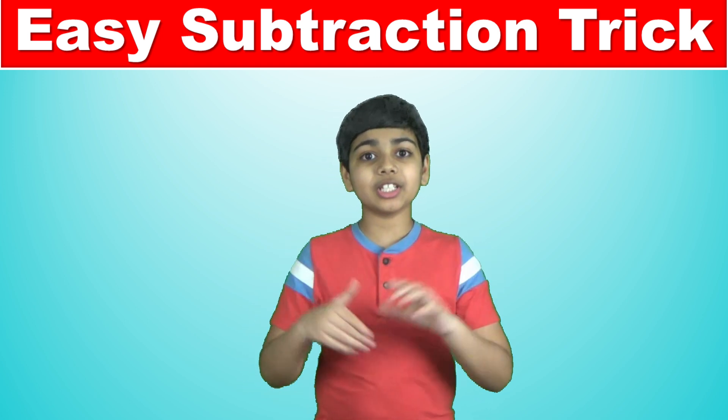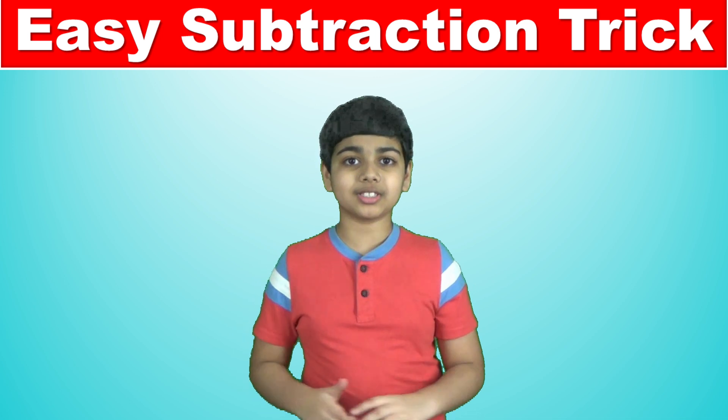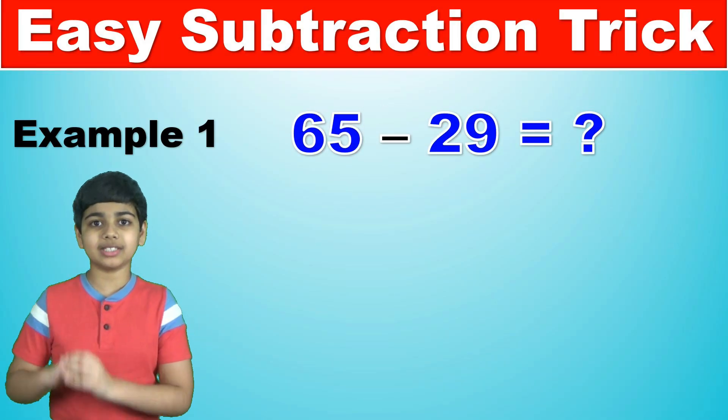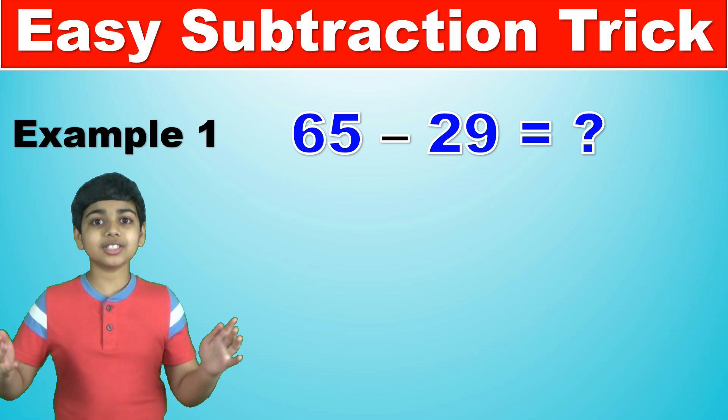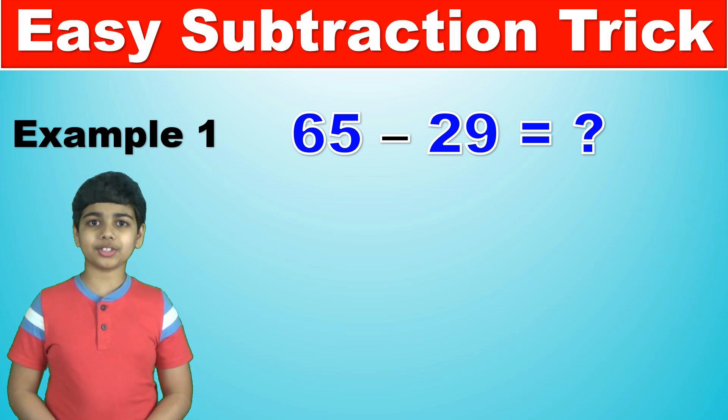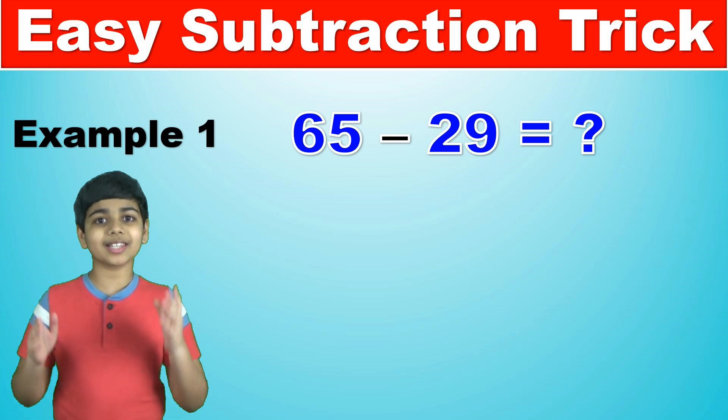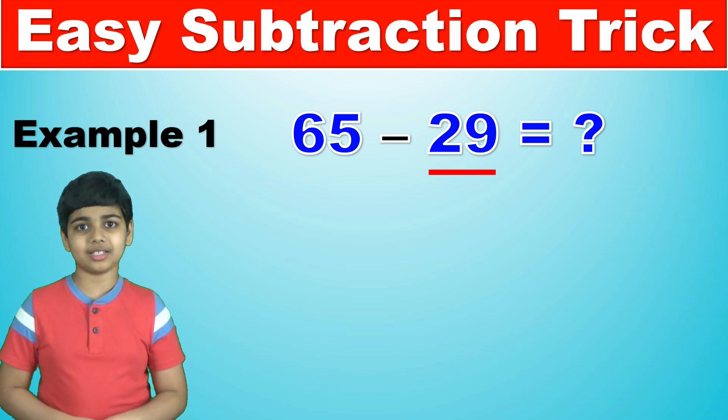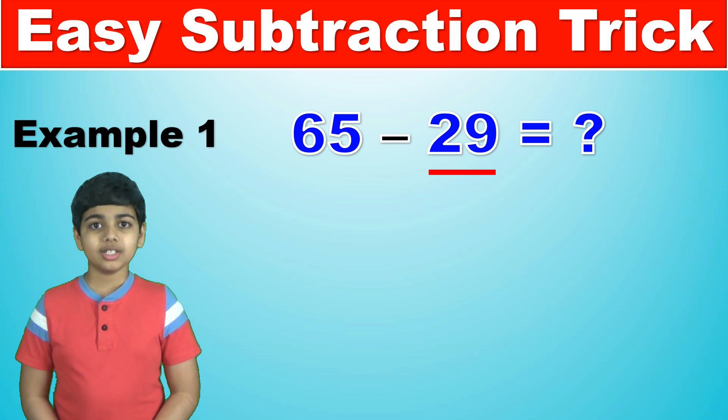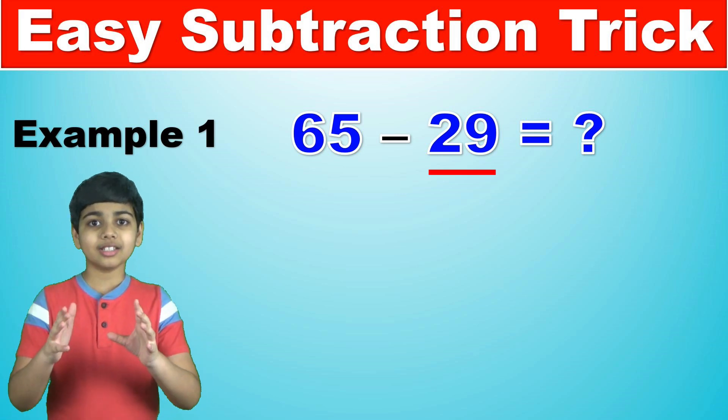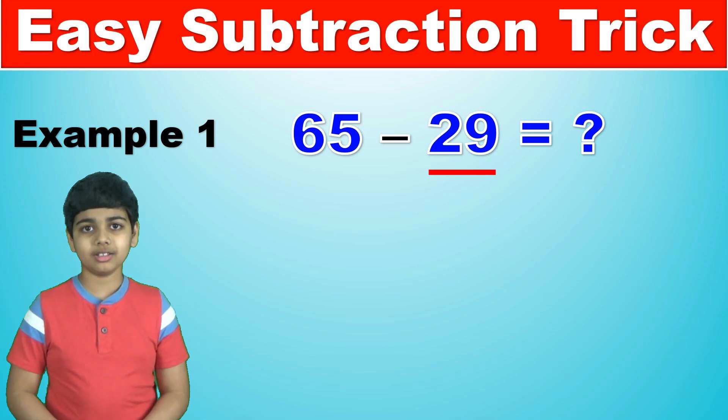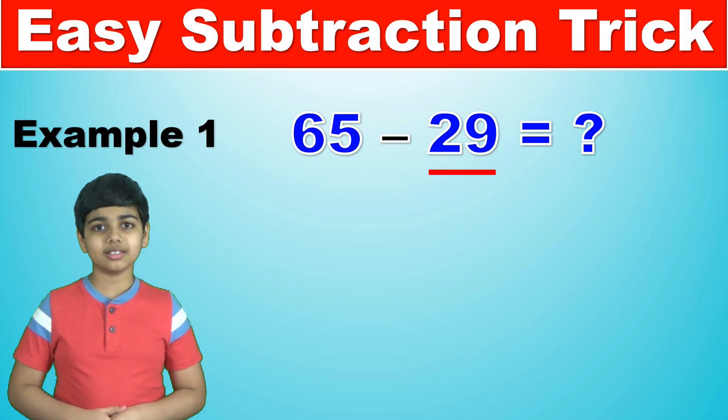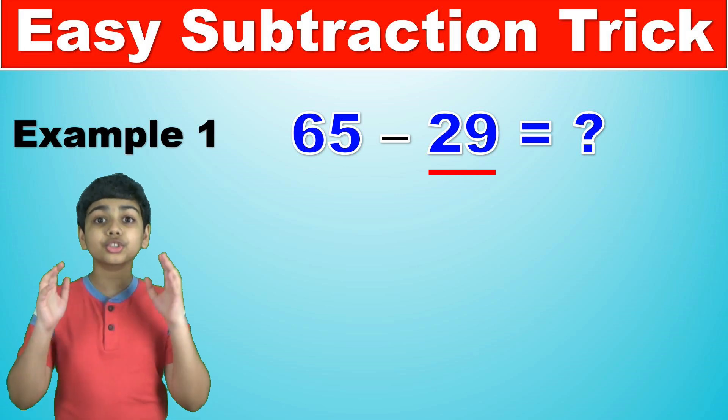For this video, we're going to start off with the example 65 minus 29. It's a very modest start to this honestly. So let's take a look at how this trick works. We're going to focus on the last number here, 29. And what we're going to do is find the closest, the nearest multiple of 10 to 29. So in this case, it is 30.